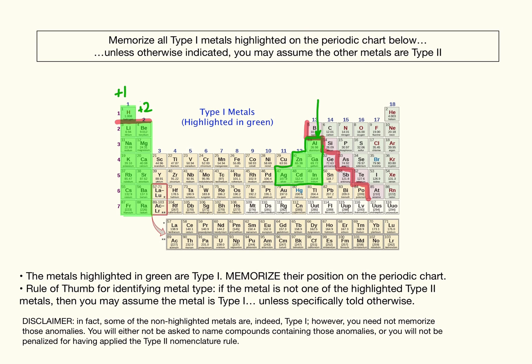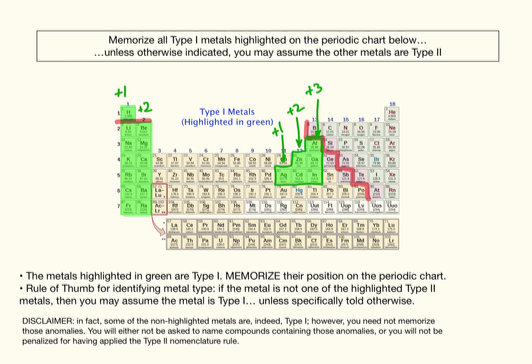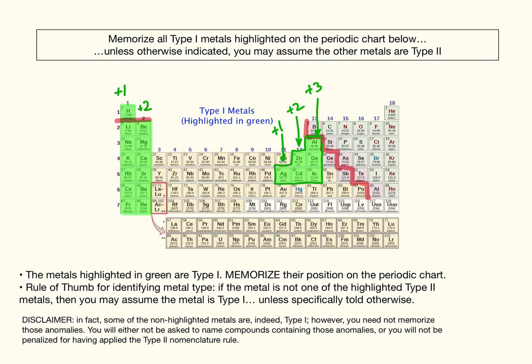These three happen to have a charge of plus 3. These two happen to have a charge of plus 2. And this one happens to have a charge of plus 1. So, for purposes of this class, any of the metals that's highlighted in green there are Type 1 metals.